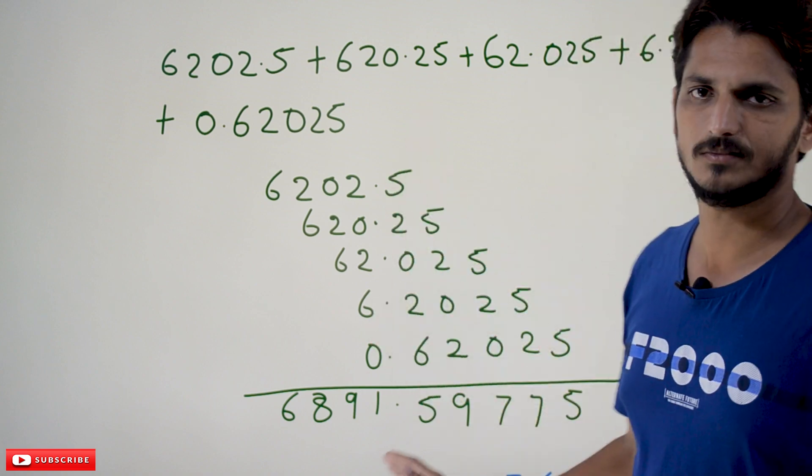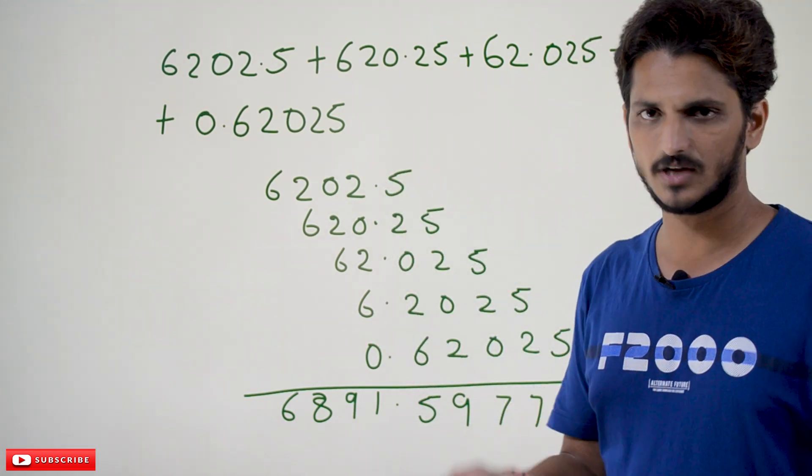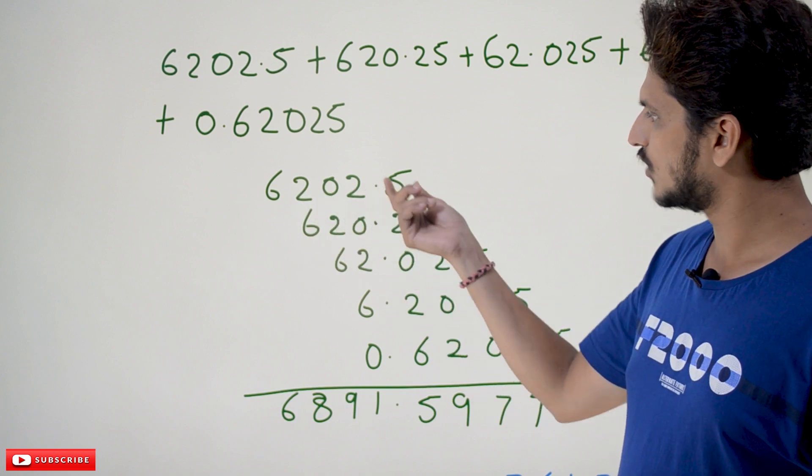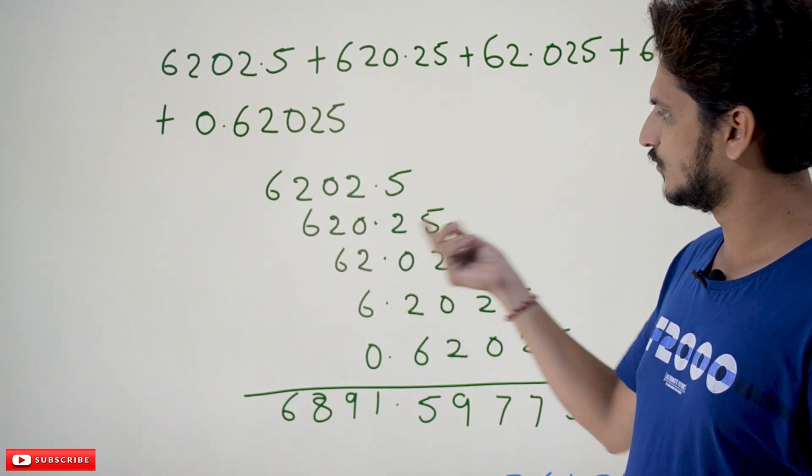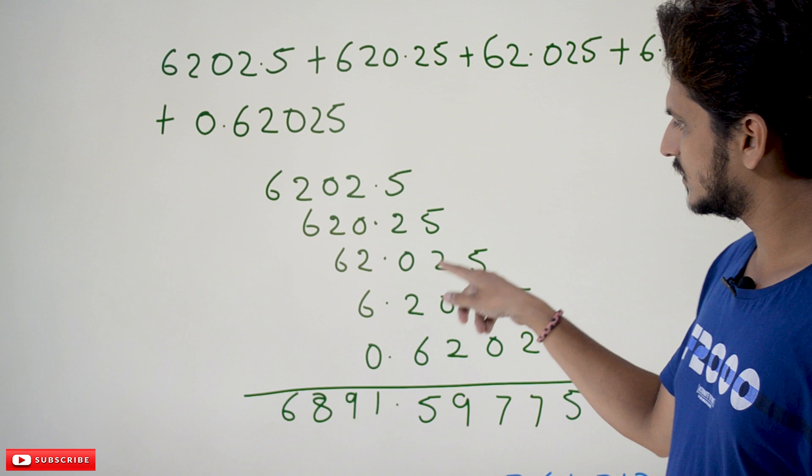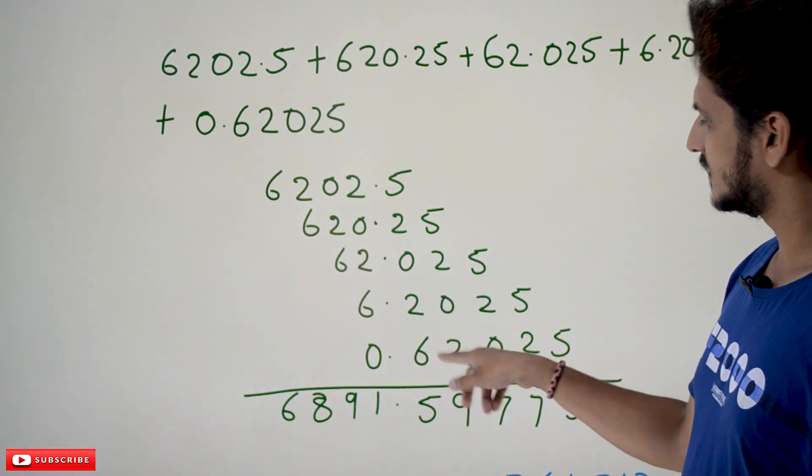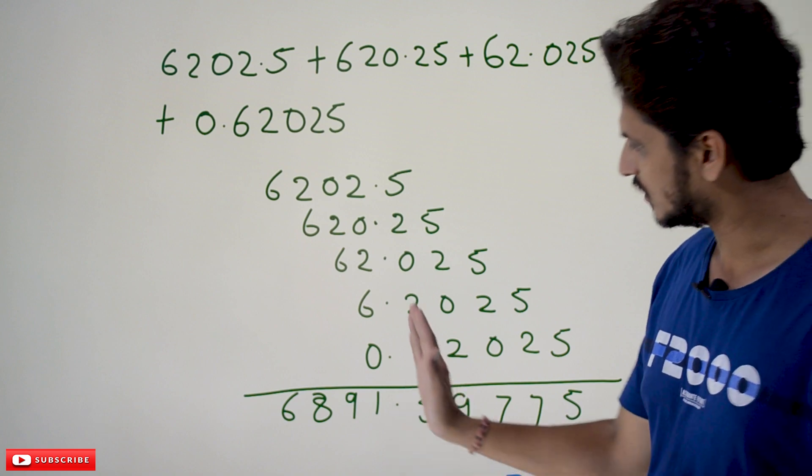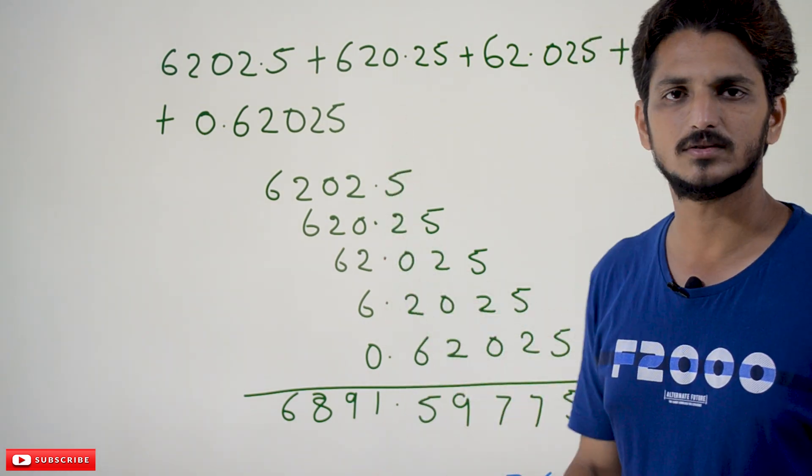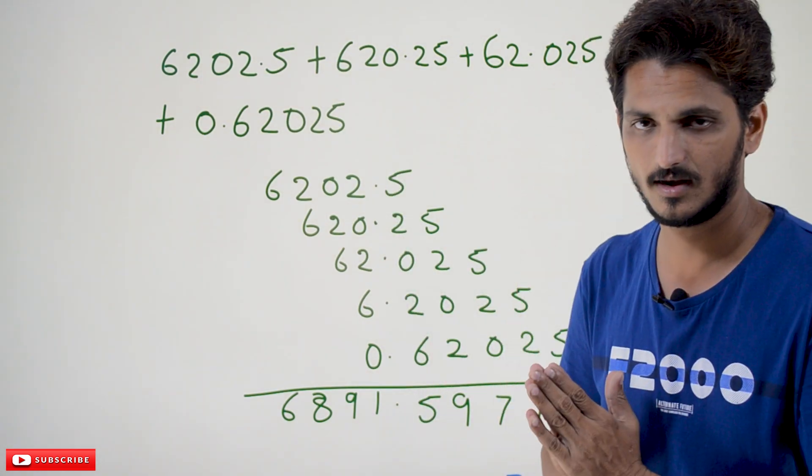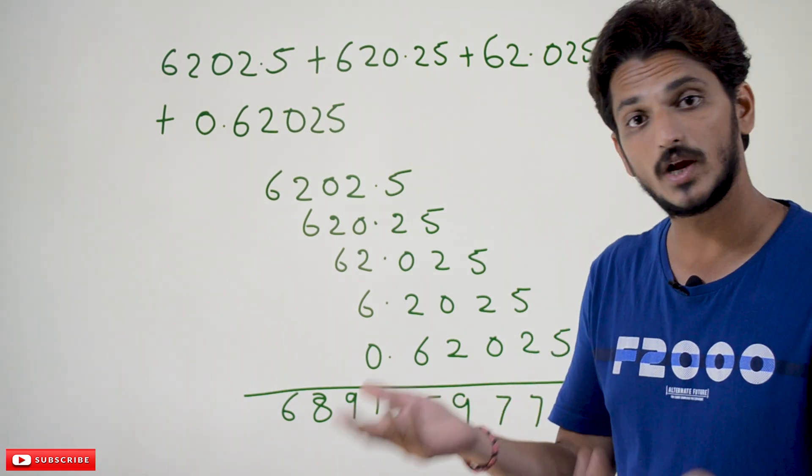Arrange the numbers: 6202.5, 620.25, 62.025, 6.2025, 0.62025. So the dot should be arranged in a sequence, they should be in a line. Arrange that and do the addition as normal addition, the same way we do normal addition.